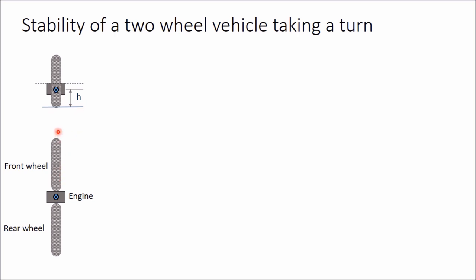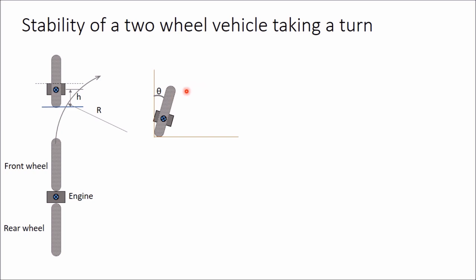When this vehicle is moving in forward direction, the front wheel and rear wheel will rotate in clockwise direction when looking from the right side. Now let us assume this vehicle is taking a right turn with radius R. In this situation, it is not possible to keep the vehicle in vertical position, so the vehicle must be tilted to some angle from the vertical. This vehicle is tilted towards the direction of rotation with an angle of theta from vertical. This angle theta is called the angle of heel.